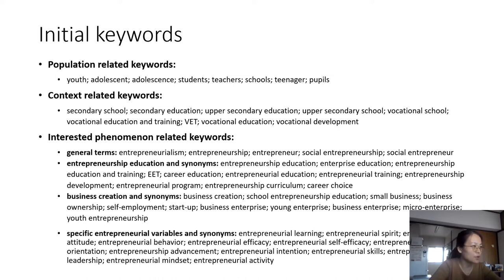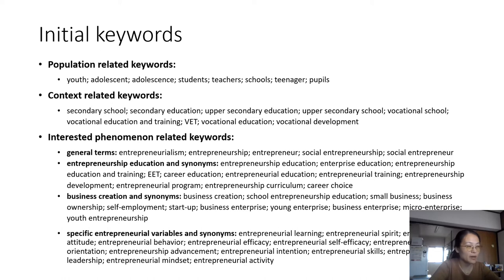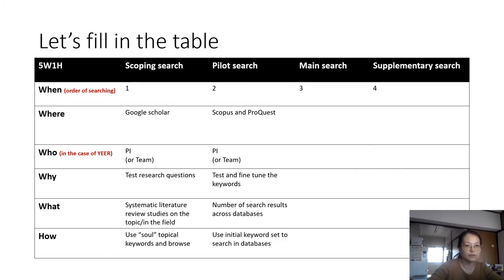As you can see here, I put three clusters to group my keywords: one is population-related keywords, one is context-related keywords, and one is interested phenomenon-related keywords. If you work with a group, you can brainstorm with each other — each person brainstorms with the literature, comes up with some keywords, and discusses within the team. The important thing is to have a set of initial keywords you've agreed on. Then you go to the pilot search and fine-tune the keywords based on the results generated.